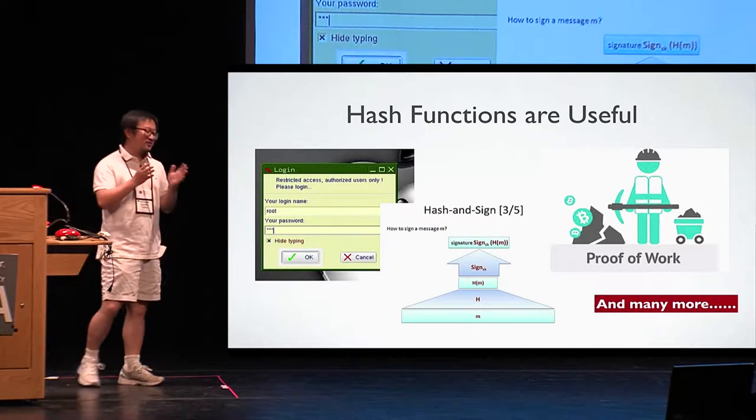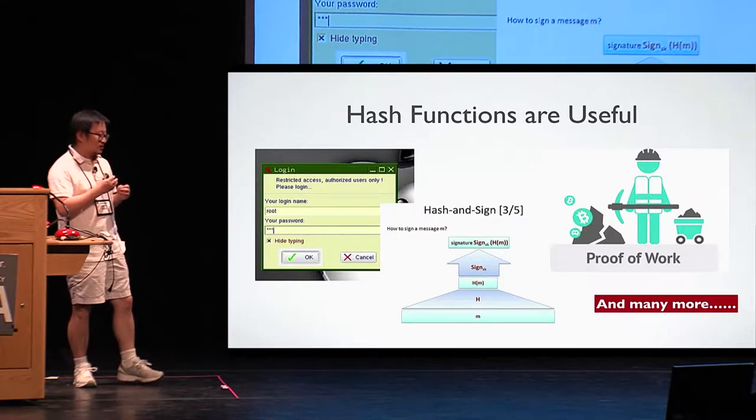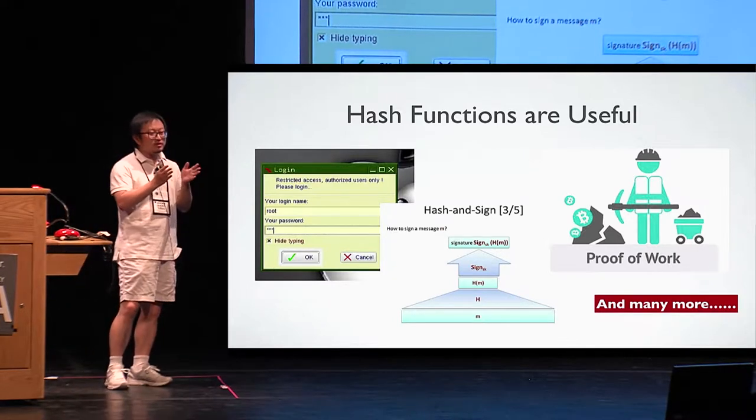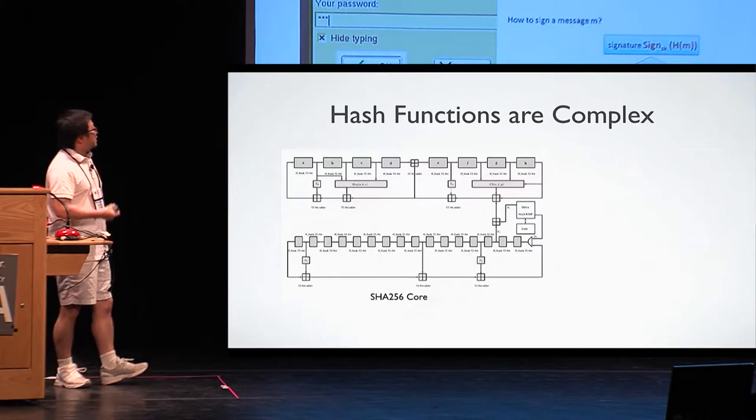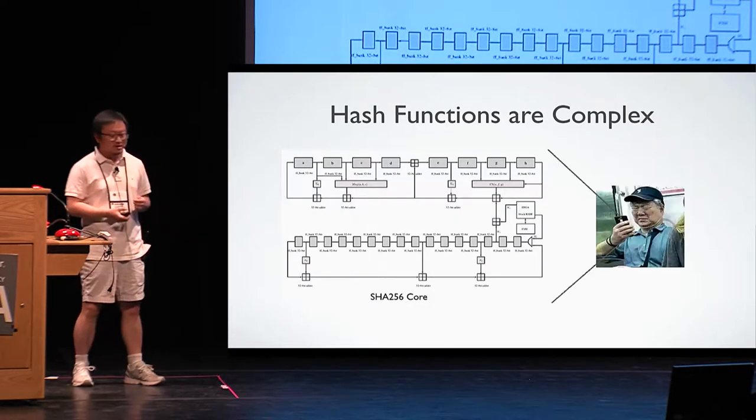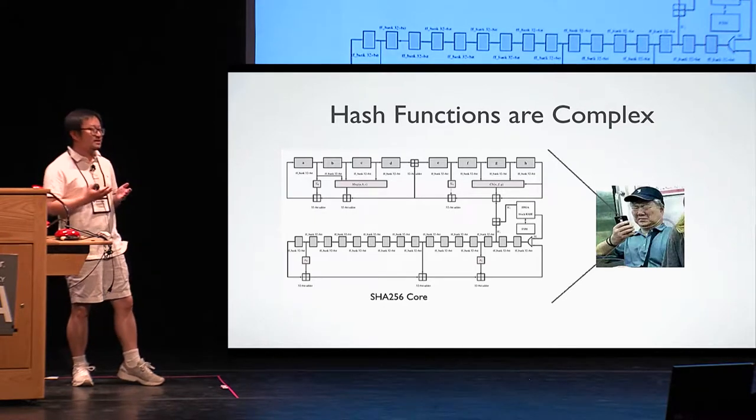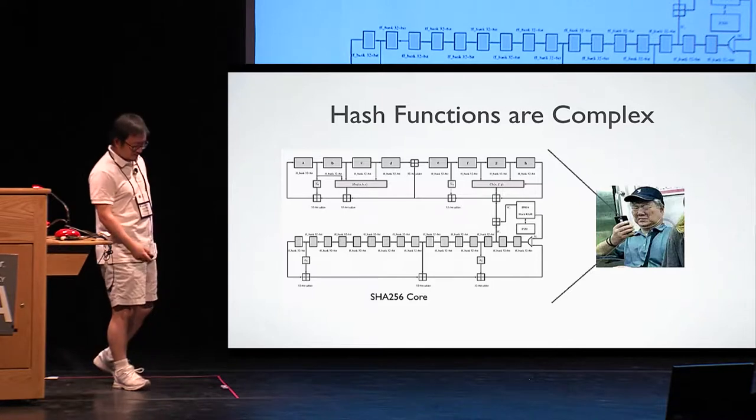We actually have a couple of candidates that can be assumed as a random oracle when we use the hash function, as long as you don't insist on still using MD5. On the other hand, the hash designs are fairly complex. Especially for non-experts like me, I don't really want to implement the hash from scratch. It's very easy to make mistakes.